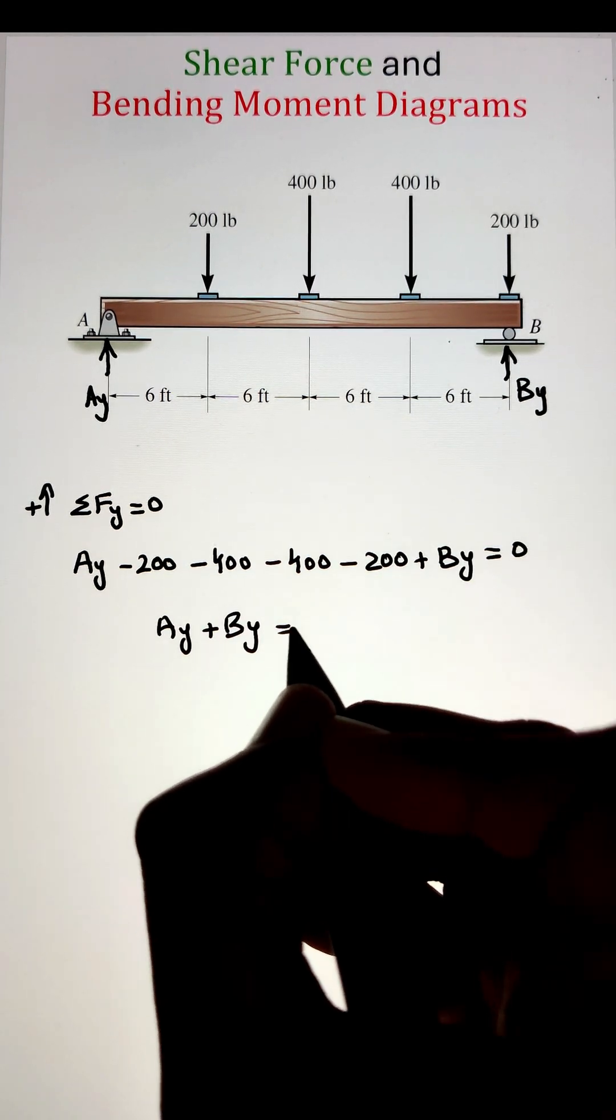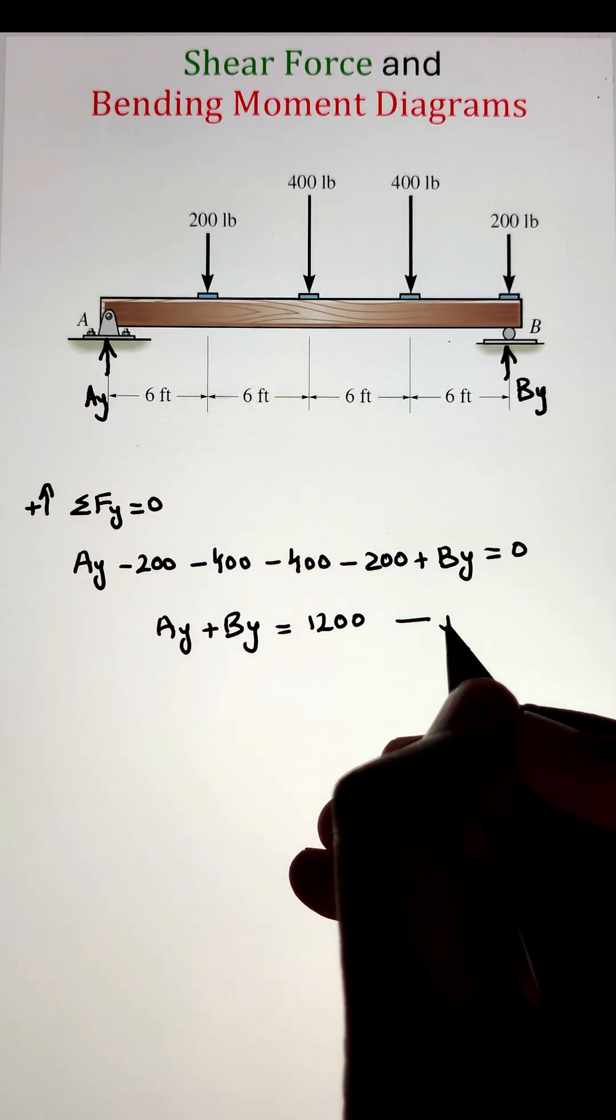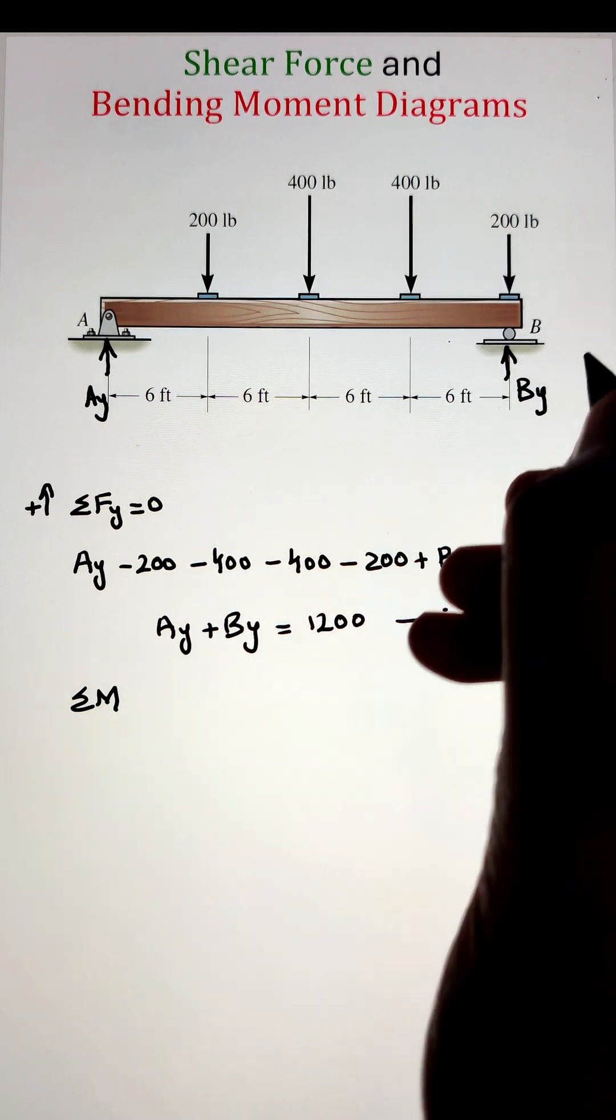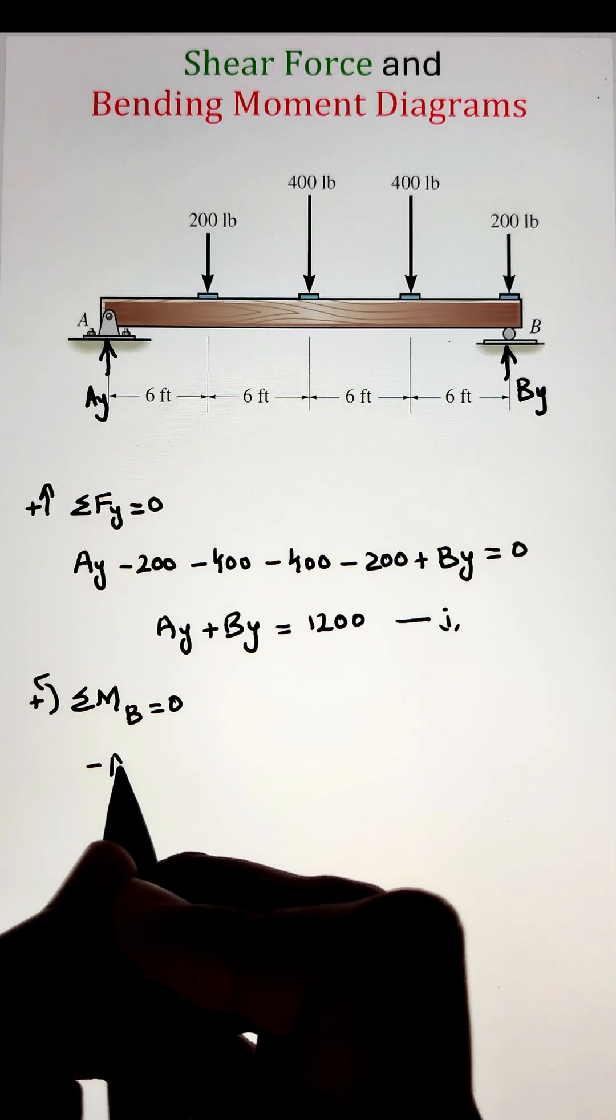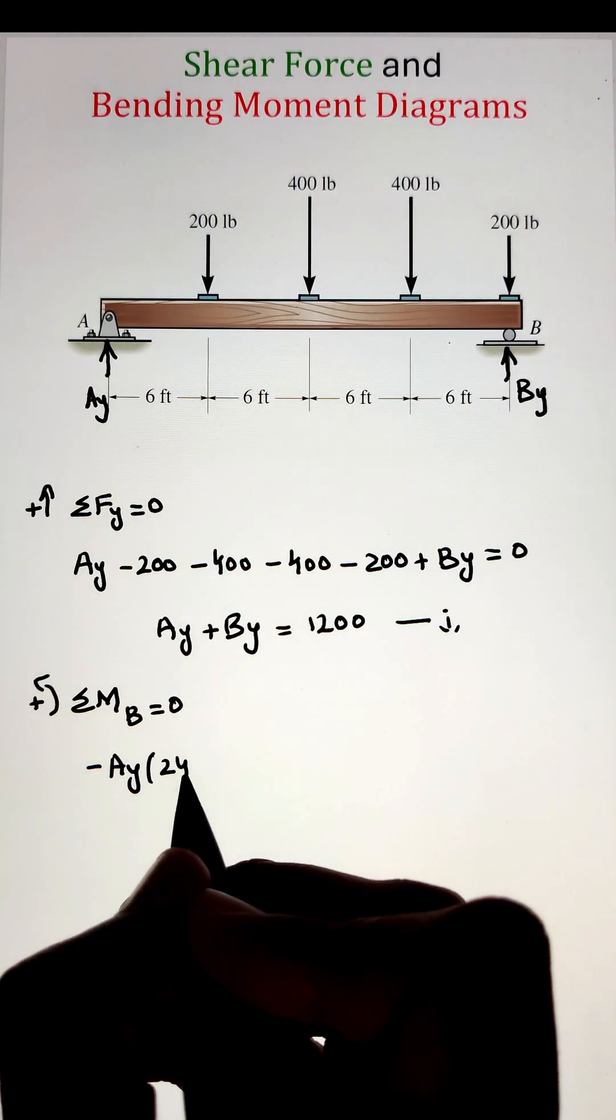So writing our equilibrium equation of summation of forces acting along the y-axis equals to 0, we can simplify the expression as Ay plus By equals to 1200.